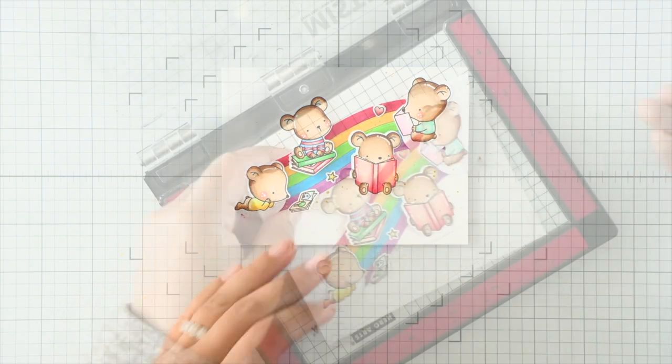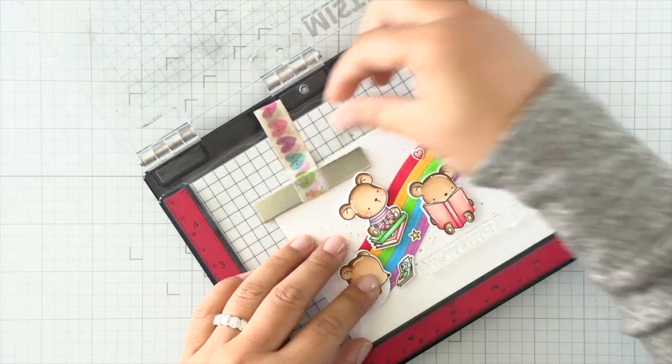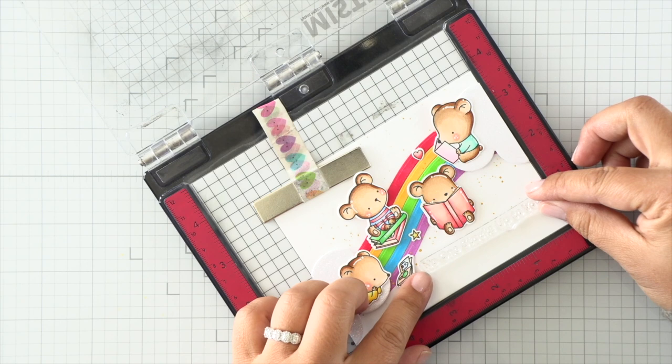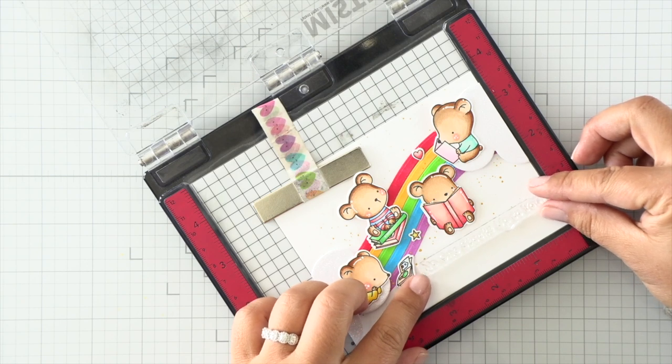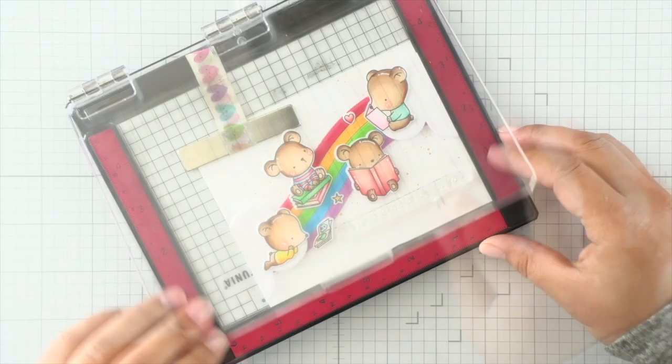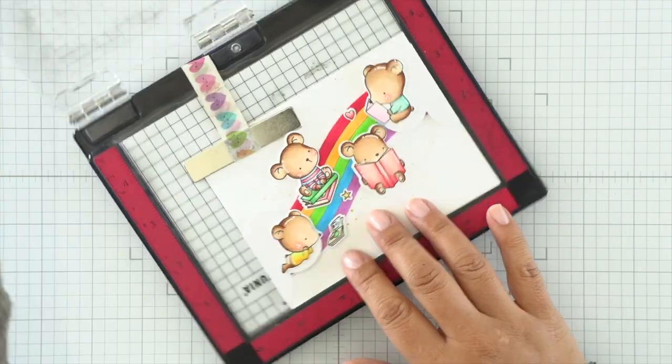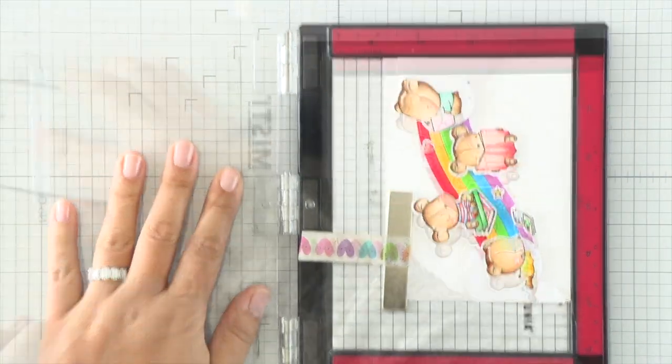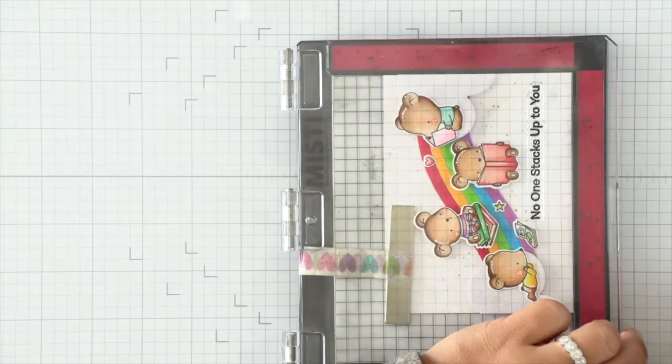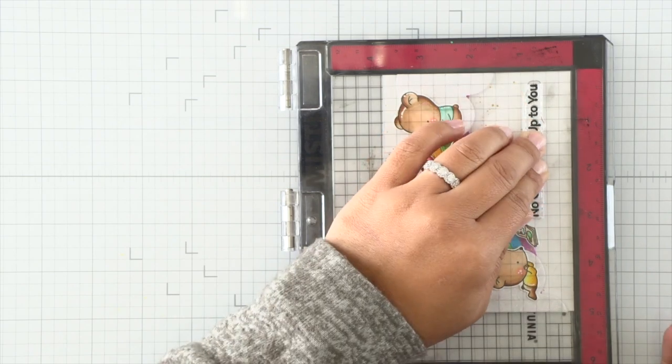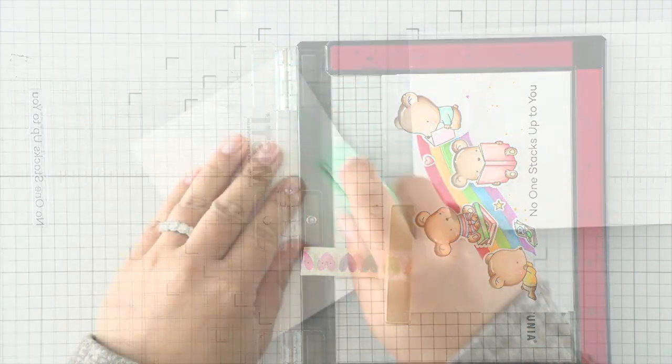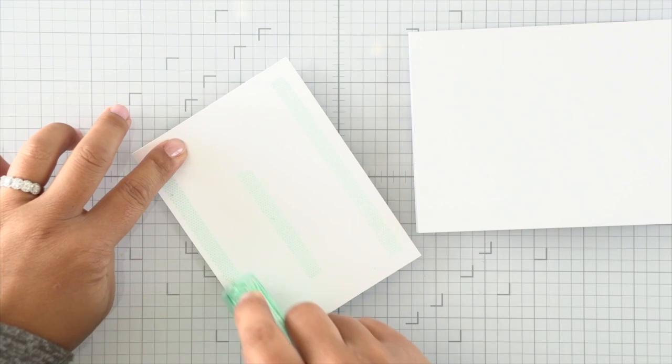Last but not least, we're going to stamp the sentiment. I played with the idea of just doing a sentiment strip, but there's plenty of white here, so we can just stamp in that white area in the bottom right hand corner of this card. I'm going to simply stamp it with a crisp black ink, and that finishes our card panel.